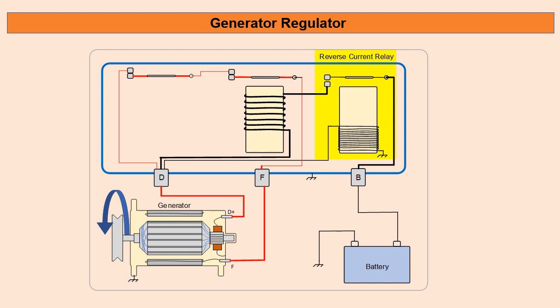As our D plus voltage starts to build up, this is applied to the reverse current relay. You can see that's highlighted in yellow and our voltage is applied to this relay from the D plus terminal. When the voltage reaches the correct level, our reverse current relay contacts close.